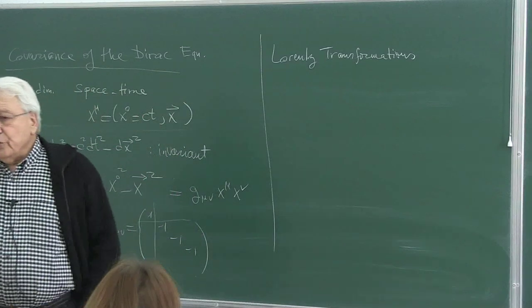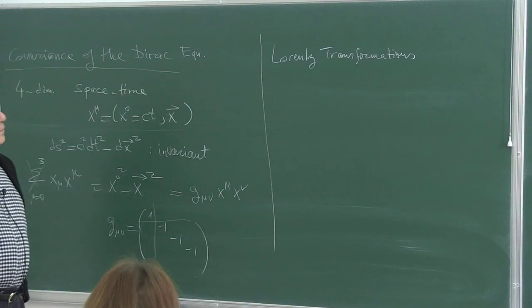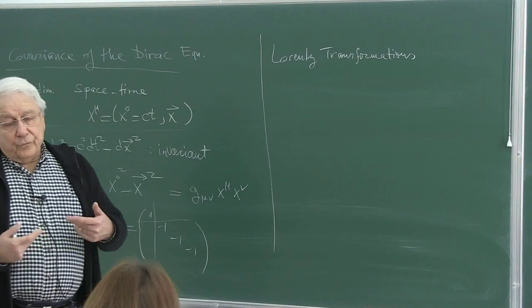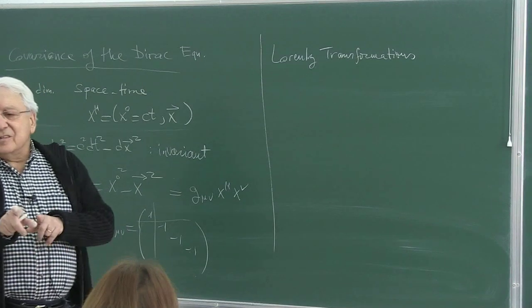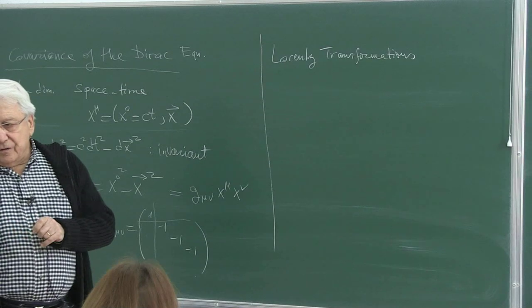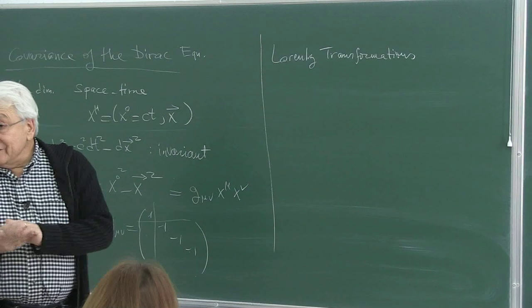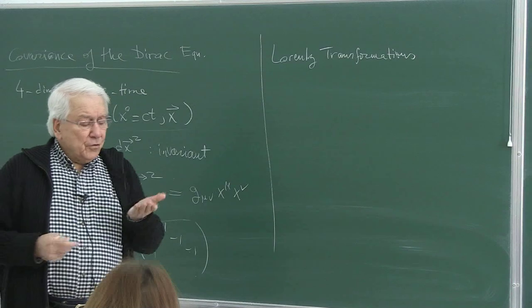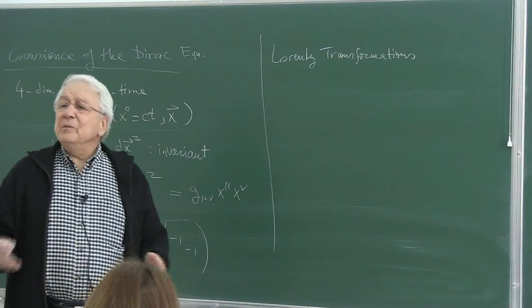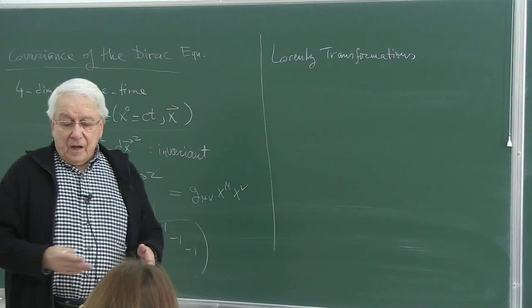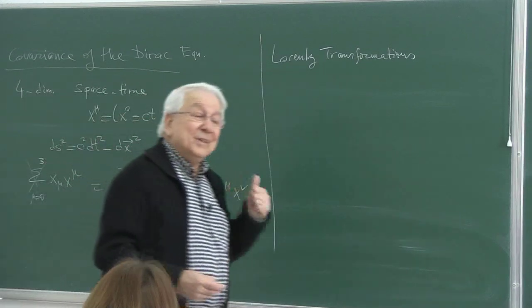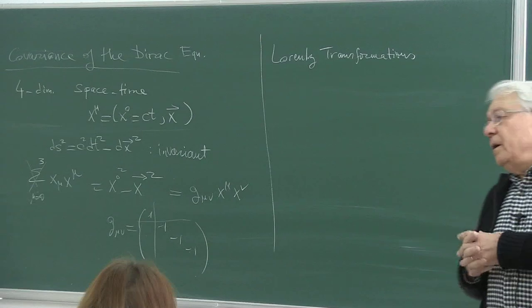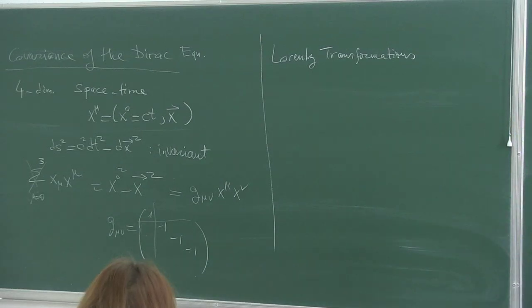There are different types of transformations between two four-dimensional coordinate frames. One could be taking two frames and moving one along one of the axes — say the x-coordinate — translating it with constant speed. We have a similar transformation in ordinary Newtonian space, but that's trivial because time is absolute and not mixed with space. That's called the Galilean transformation, and Newton's equations are invariant under the Galilean transformation.